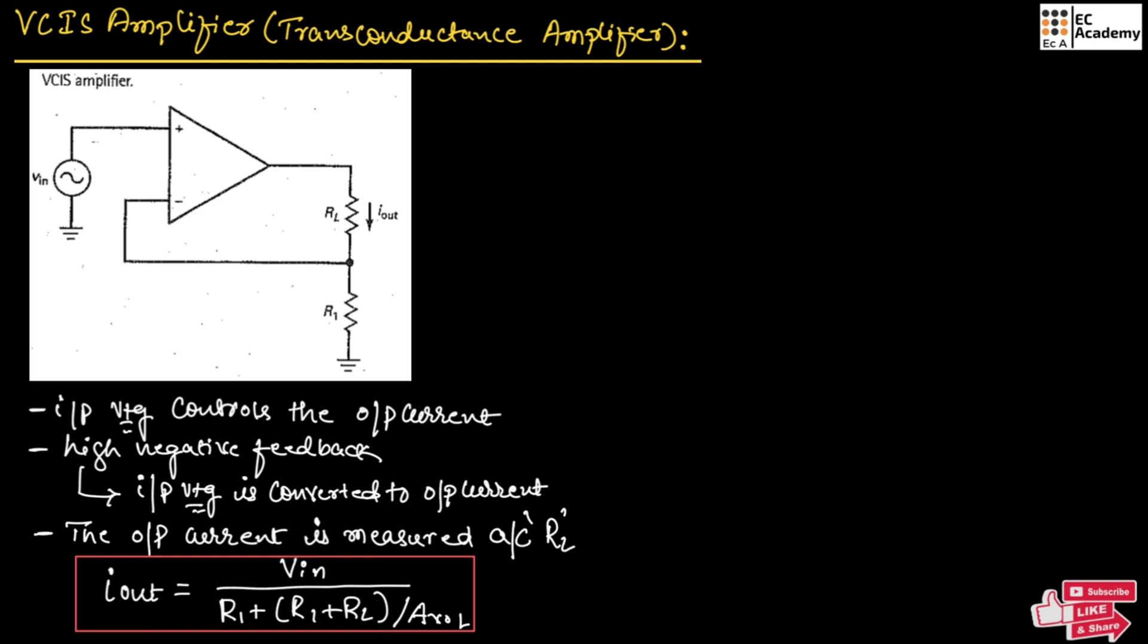Here R1 and RL are the resistances connected in the circuit as shown in this figure. Vin is the input voltage and Avol is the open loop gain. In practical circuits, the ratio (R1 plus RL) divided by Avol is very much smaller compared to R1.